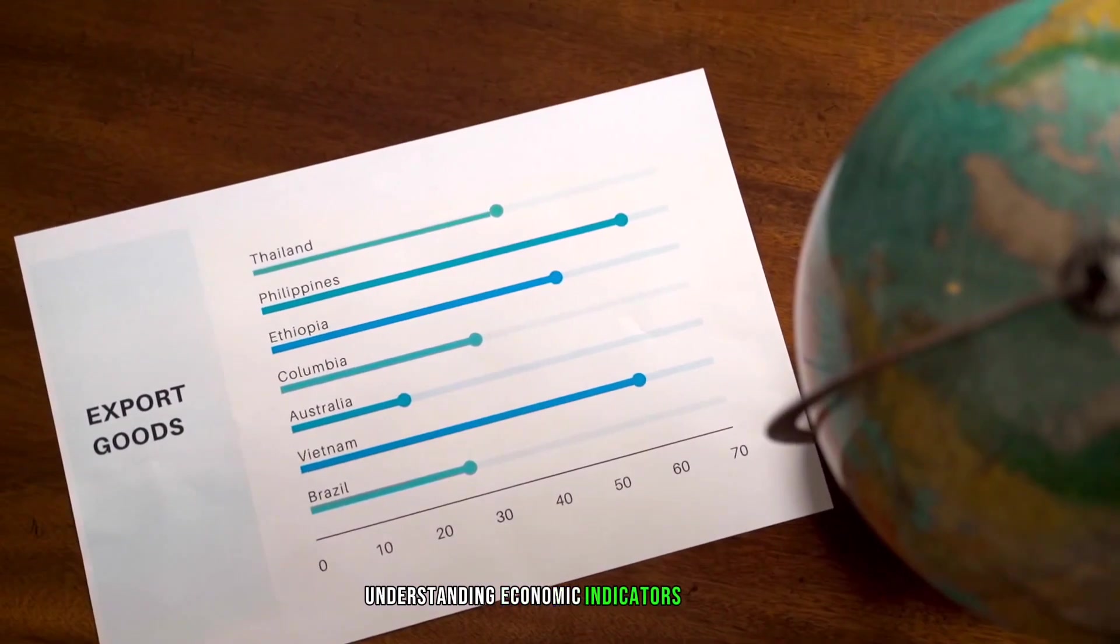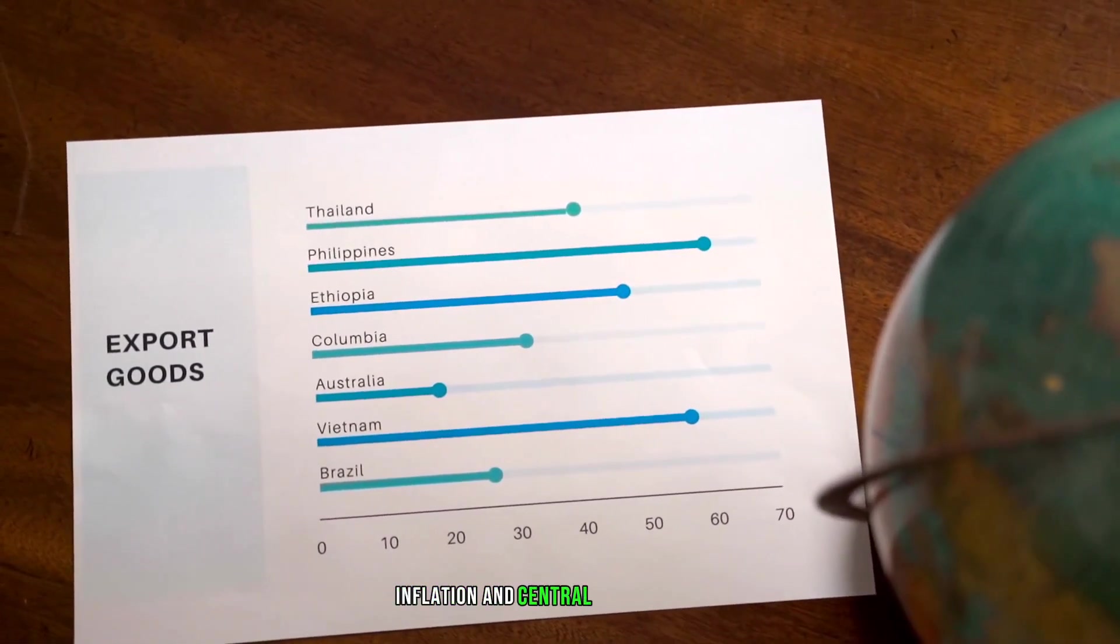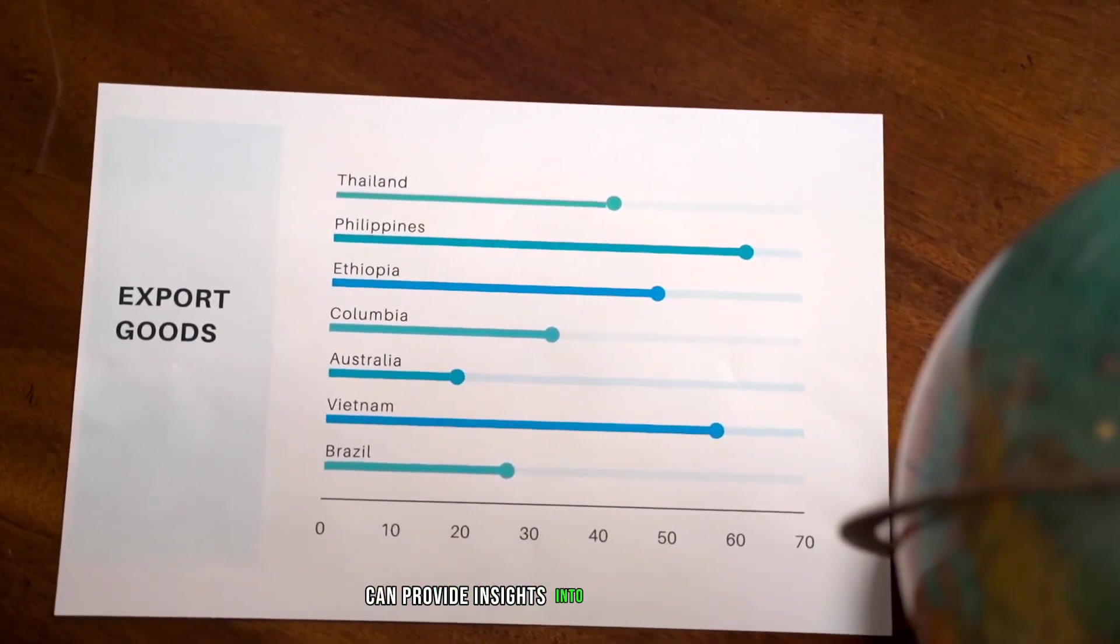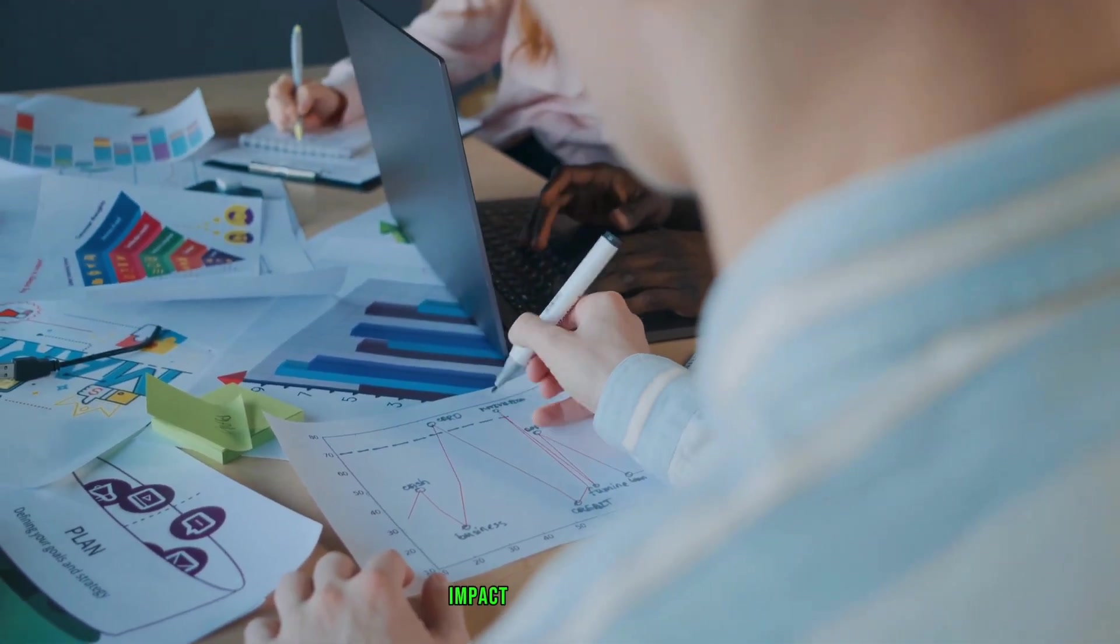Understanding economic indicators like GDP, employment rates, inflation, and central bank decisions can provide insights into market directions. These indicators can significantly impact market sentiment and, consequently, asset prices.